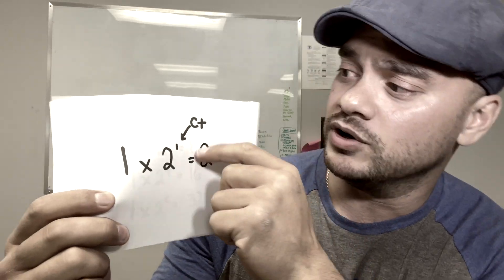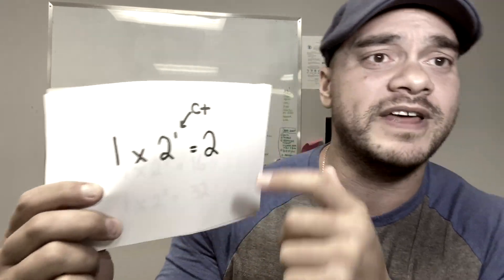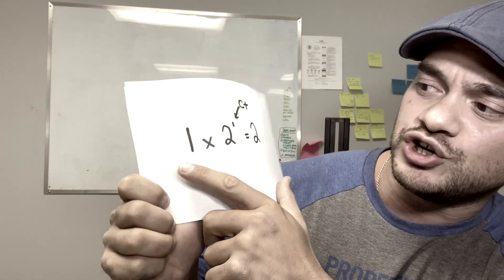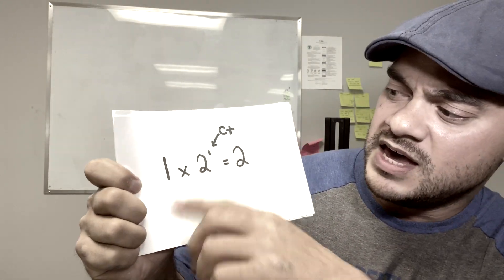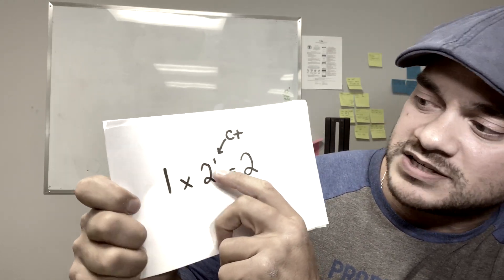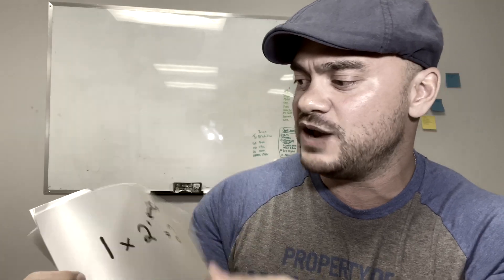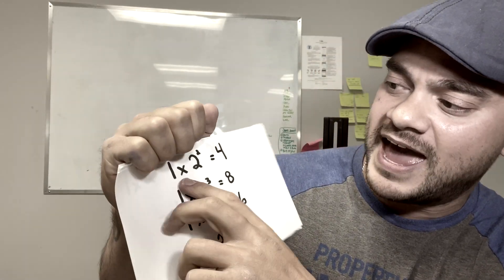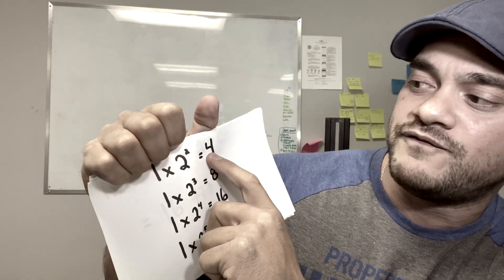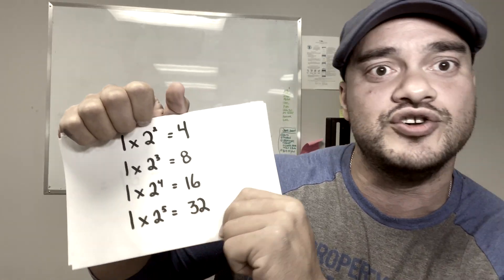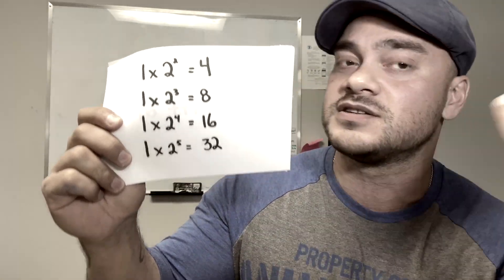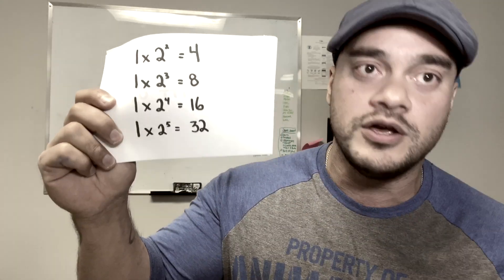So let's look at cycle threshold — that's the amount of times the test photocopies the DNA. You start with your original DNA sequence, heat it up, split it, and it doubles. One cycle gives you two copies, then four, then eight, sixteen, thirty-two, sixty-four, one hundred twenty-eight, two hundred fifty-six, five hundred twelve, one thousand twenty-four — and so on exponentially.